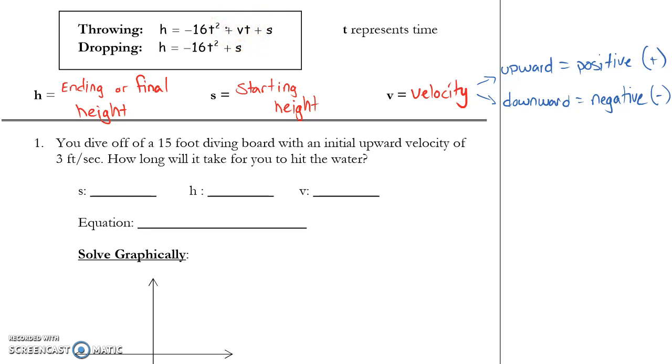Whereas when you're dropping it, you're not providing an additional force, you don't have to add anything. The difference in the wording is just going to be whether you're given a velocity or not. So we're told that we have an initial upward velocity of 3 feet per second here. That means I know I have a positive 3 for my velocity because it's an upward velocity.